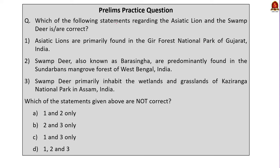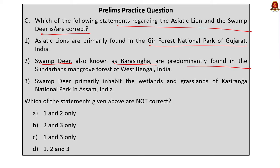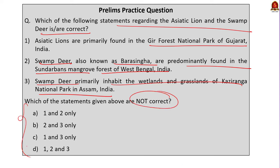Answering the question on Asiatic lion and Swamp Deer: which statements are not correct? Statement 2 — Swamp Deer are predominantly found in Sundarbans mangrove forest of West Bengal — is incorrect. Statement 3 — Swamp Deer primarily inhabit wetlands and grasslands of Kaziranga National Park — is incorrect, as populations are concentrated in Northern and Central India, with Swamp Deer also found in Kanha National Park in Madhya Pradesh and Chhattisgarh, and they are likely regionally extinct in West Bengal. The correct answer is option B — 2 and 3 only.